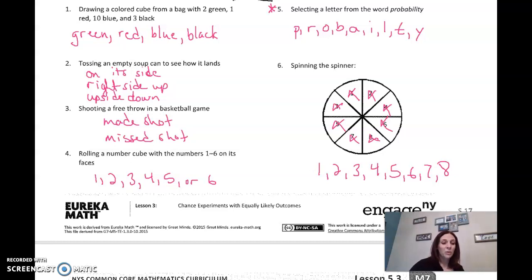So when we're doing outcomes in sample space, we're not concerned with the probability of each one happening, but we're really just listing all of our possible outcomes.